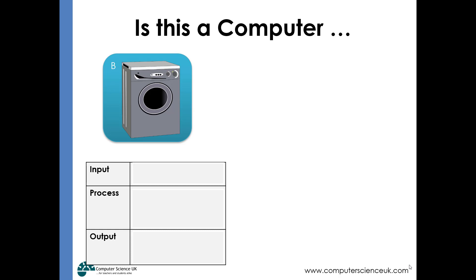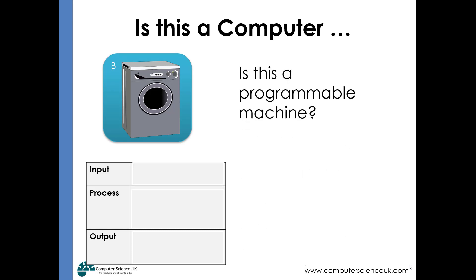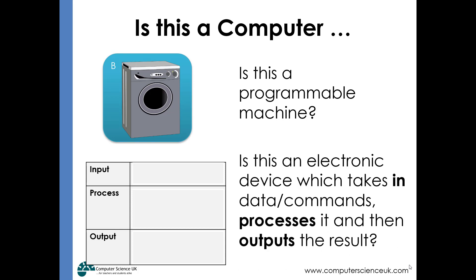Let's have a look at a washing machine. Using those definitions, is it a programmable machine? Yes — we can program it to do different cycles, perhaps wash clothes for a certain amount of time and have the drum spin at a certain speed. Is it an electronic device which takes in commands and processes them to produce outputs? Yes. It's certainly electronic, we can give it different commands, and the computer in the device will process those commands, make decisions, and produce different results.